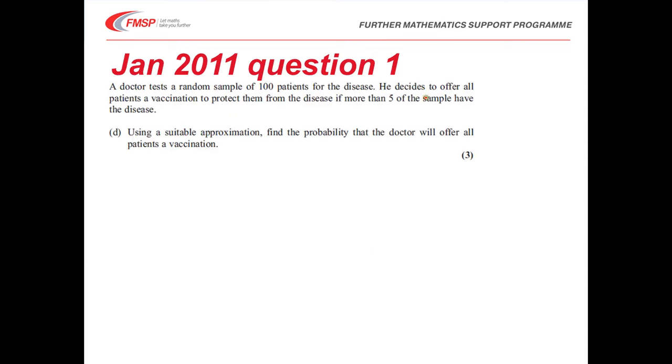We're then given some more information. The doctor decides to offer all patients a vaccination to protect them if more than 5 people of the sample have the disease. We're asked to use a suitable approximation. Firstly, NP we've calculated is less than 10 because it's equal to 3. We know that the expected value is equal to 3 and the variance is equal to nearly 3.